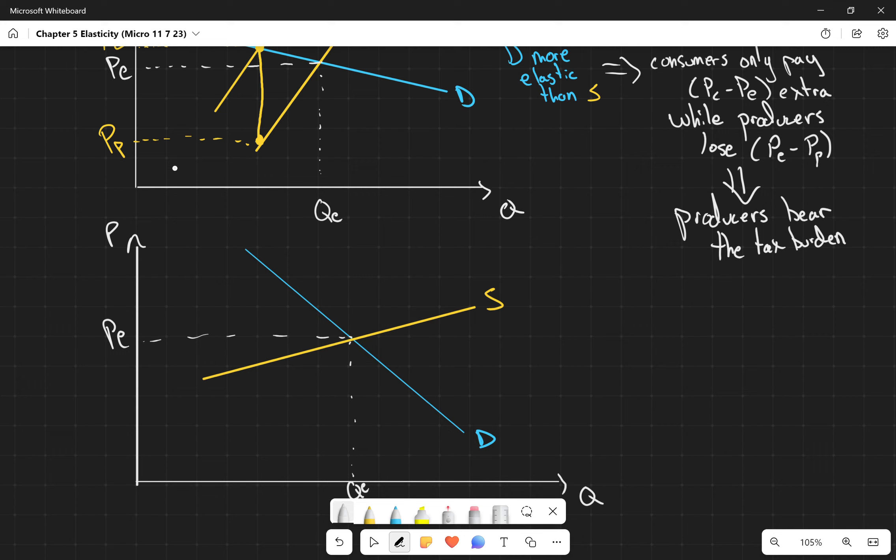And we find that with that same tax, that same size of a tax, that same three square tax, we are now at a price where the consumers are paying much more compared to that old equilibrium. And the producers are getting less than they were before, surely, but not a significant amount less. So when our supply is more elastic than our demand, consumers pay more.